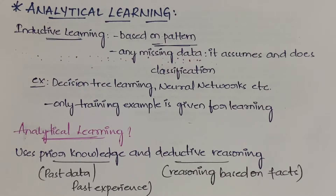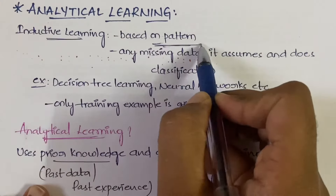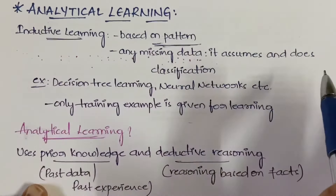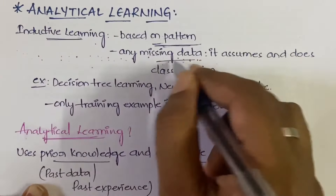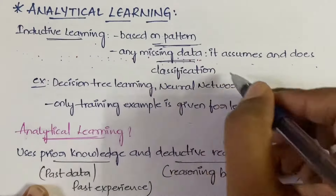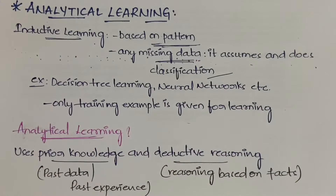Inductive learning is based on patterns, whereas analytical learning is not based on patterns — it is based on facts. In case of inductive learning, if there is any missing data, it will assume and perform the classification on its own, correcting errors by itself. Examples of inductive learning include decision trees and neural networks.